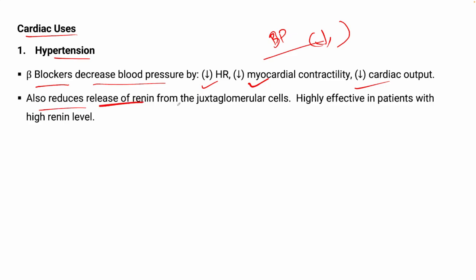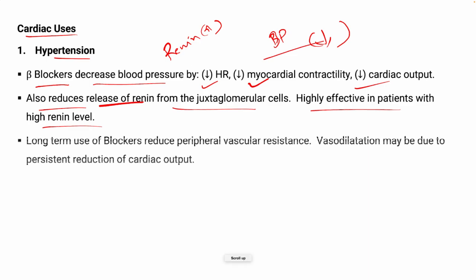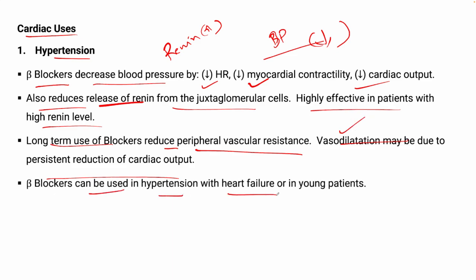Beta blockers also reduce the release of renin from juxtaglomerular cells of the kidneys and are highly effective in patients with high renin levels, so you can give beta blockers to patients who have renin problems where levels are fluctuated. Long-term use of beta blockers reduces peripheral vascular resistance, hence vasodilation, possibly due to persistent reduction of cardiac output. Beta blockers can be used in hypertension with heart failure or in a young patient.